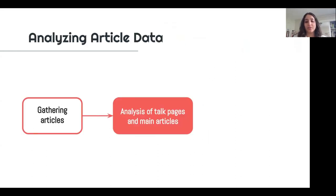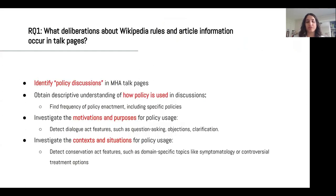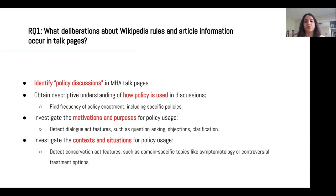We want to analyze the talk pages and main articles of our whole dataset. For RQ1, which probes policy discussions in mental health article talk pages, we first need to identify what policy discussions are — thankfully, previous work has done this for us. We want a descriptive understanding of the frequency of policy enactment and which policies are enacted. On a deeper dive, we'll look at the motivations, purposes, and contextual factors for policy usage using an unsupervised dialogue act detection method from previous Wikipedia research — looking for features like asking questions, making objections, or clarifying. We'll also look at domain-specific topics such as symptomatology or controversial treatment options.